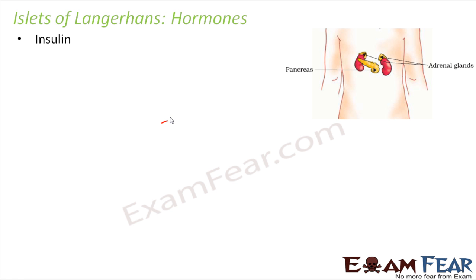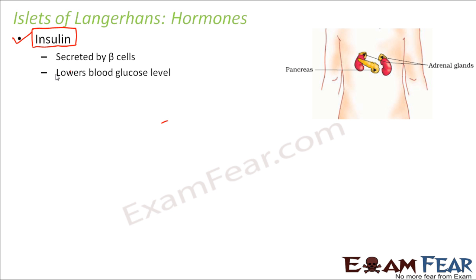One important hormone is insulin. You would have heard of it if you know anyone who is a diabetic patient. Diabetes occurs when the blood glucose level increases too much, and in that case the patient is often given insulin by doctors. Insulin is a hormone which helps to reduce or lower the blood glucose level — that is its most important function. It is secreted by the beta cells of the pancreas, and its job is to lower the blood glucose level.